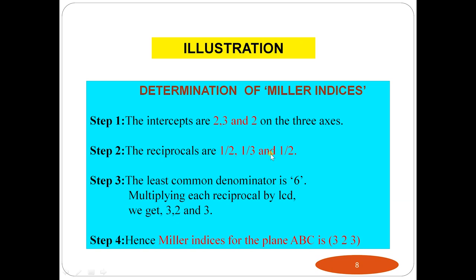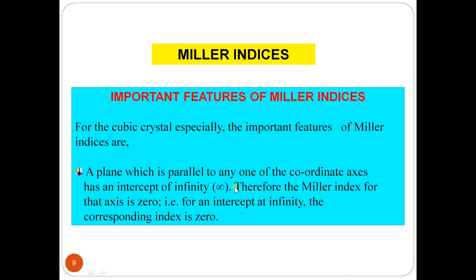The intercepts are 2, 3, and 2. Their reciprocals are 1/2, 1/3, and 1/2. The least common denominator for 2, 3, and 2 is 6. Multiplying each reciprocal by 6 gives 3, 2, and 3. So the Miller index of this plane is (3 2 3). This is the procedure for obtaining the Miller index of a given plane.